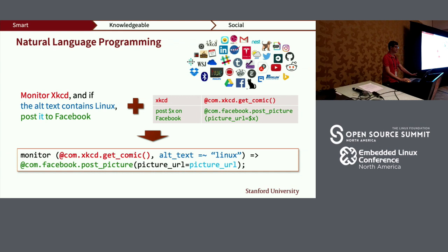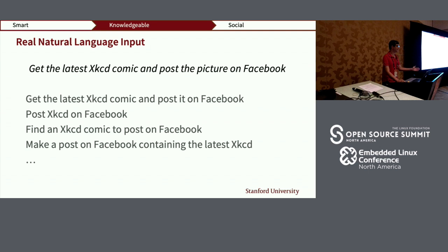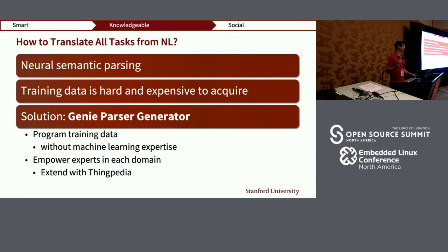The natural language input is not as simple as writing code in English. Given a sentence constructed out of information in Thingpedia, the user might issue all sorts of variations of commands. So how do we build our system to understand all these variations and map them to the same code? The key intuition is neural semantic parsing — a machine learning algorithm that takes natural language and translates it into executable representation.